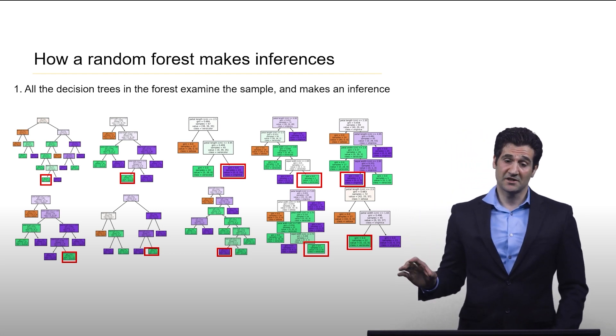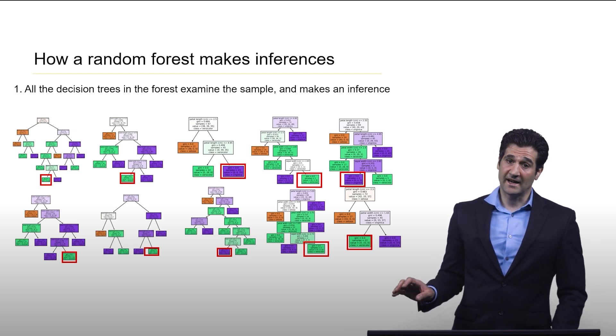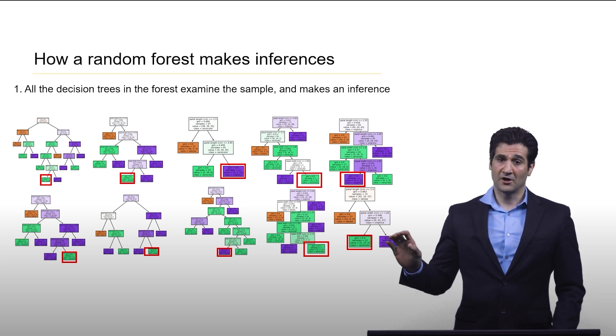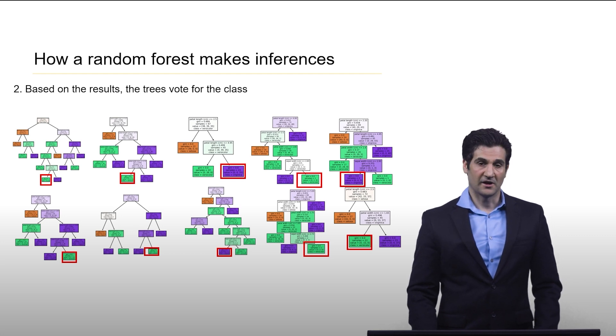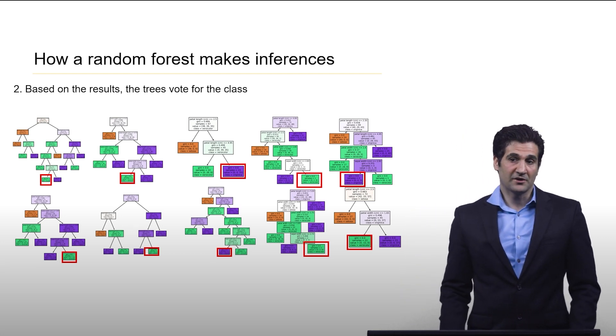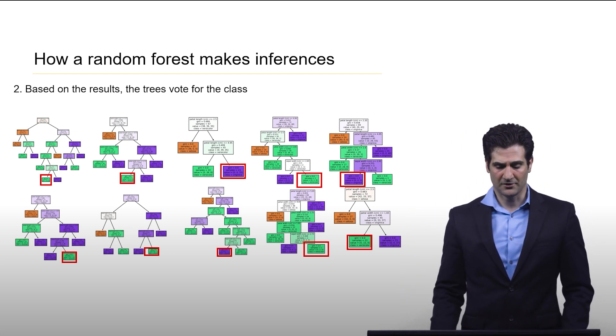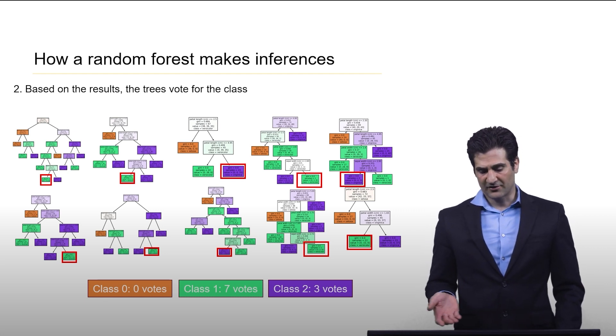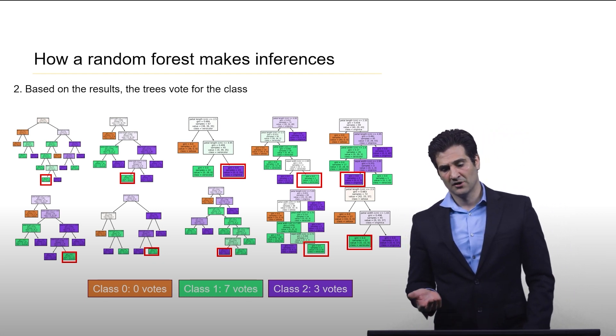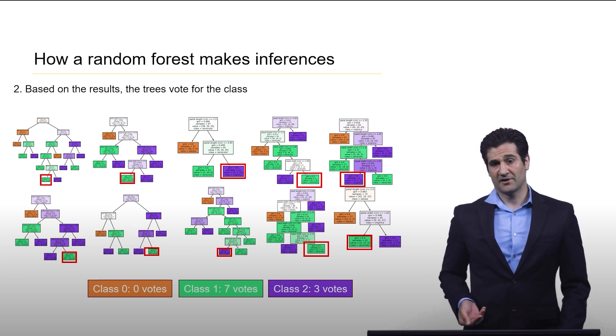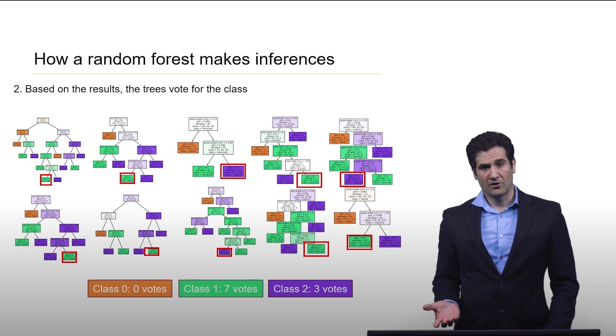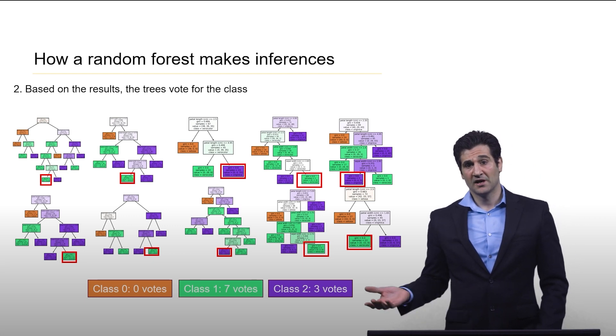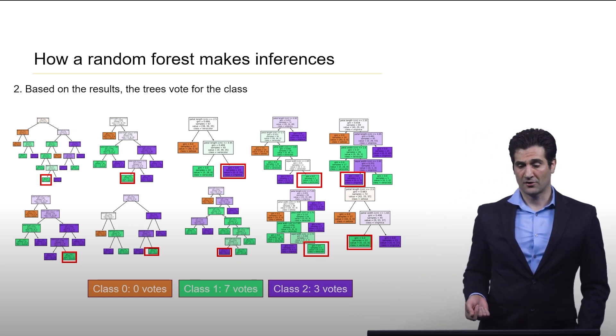This is okay because in the next step we look at how to aggregate the scores of the different decision trees. A very simple way to do that that's widely used is through voting. So we have three classes: zero, one, and two. None of the decision trees classified our new sample as class zero. Seven of them classified it for class one and then three classified it for class number two.